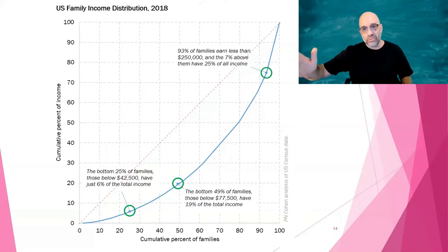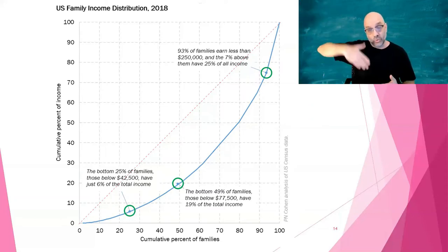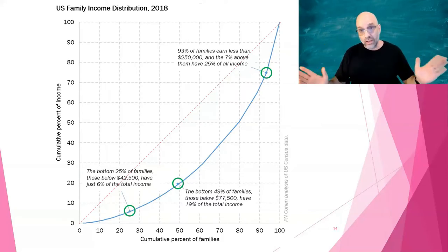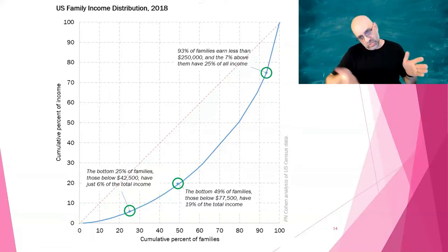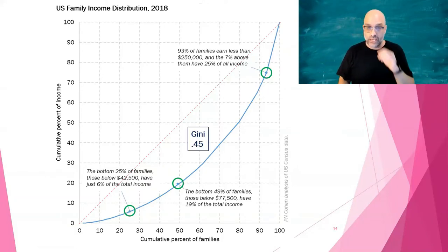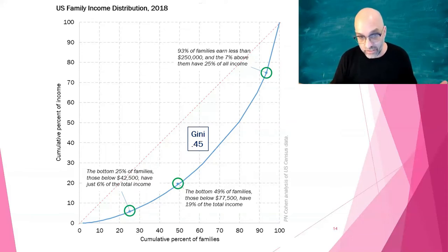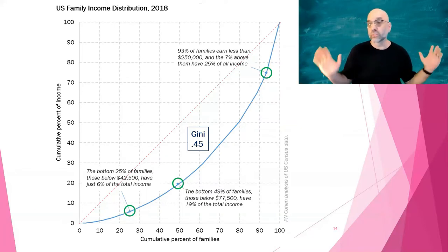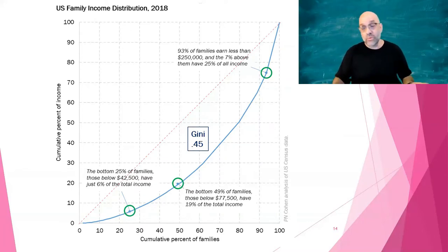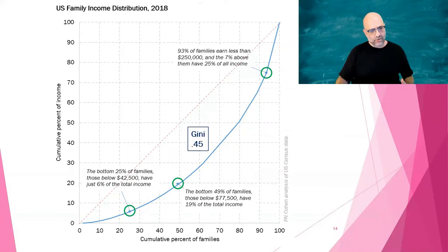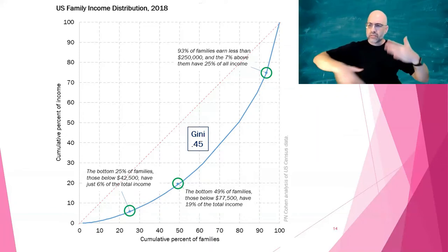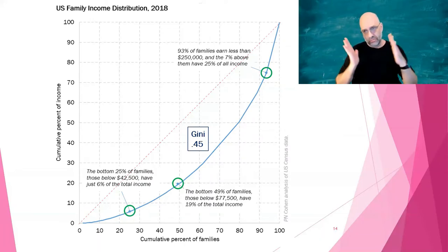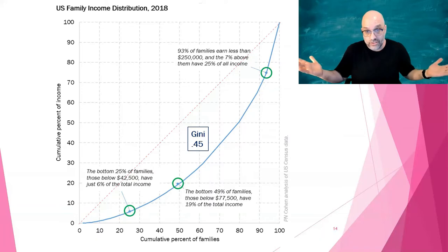Meanwhile, up at the top, 93% of families earn less than $250,000 a year, so the top 7% above $250,000 have 25% of all income. This curve looks similar to the Lorenz curve from our simple example. In real life, the United States has a Gini index of family inequality of 0.45, meaning 45% of the lower right triangle is above the blue line. Now that we have a number on it, we can ask questions like: is it going up or down? Is it more or less than France? Describing the whole income distribution with one number turns out to be super useful for analyzing society.